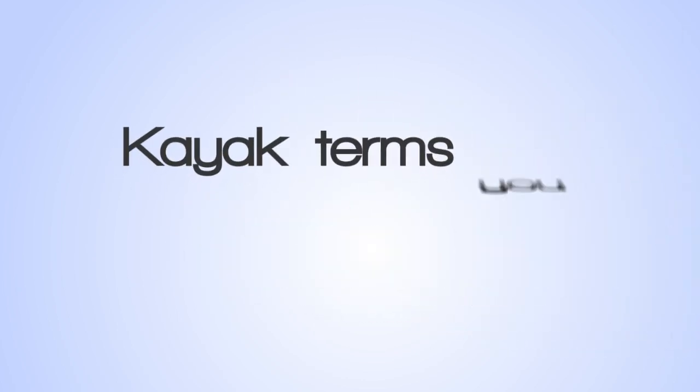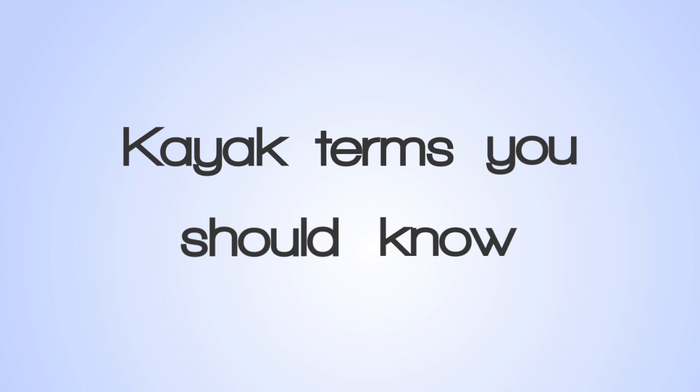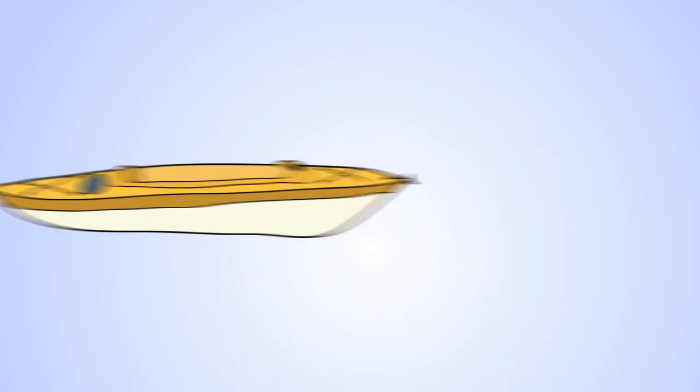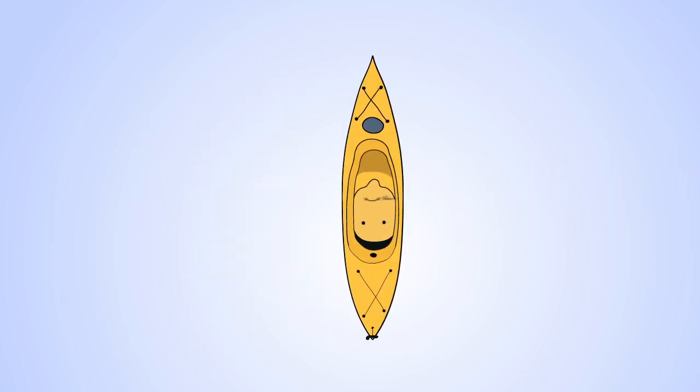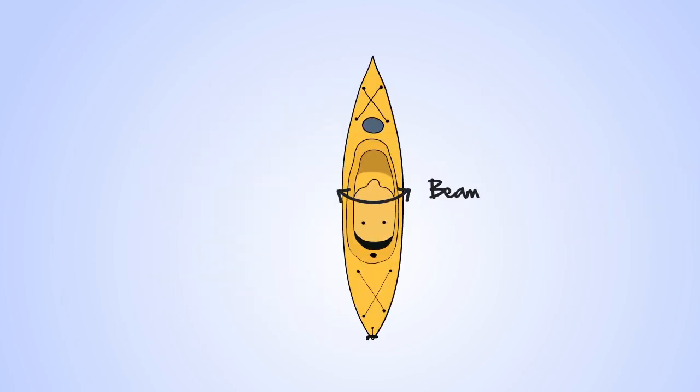Here are some kayak terms you should know so you can ask the right questions when you go to buy your kayak. The front part of the kayak is called the bow, and the back is called the stern. The cockpit is where you sit. The deck is the top of the kayak, and the hull is the bottom of the kayak. The beam is the widest part of the kayak, usually mid-ship.